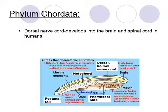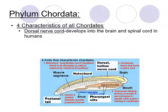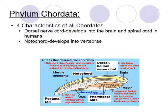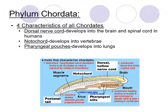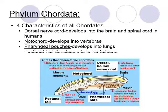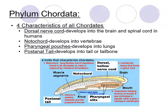Just to introduce Phylum Chordata — these are organisms that have either a backbone or at least a spinal cord. The four characteristics of chordates are: a dorsal nerve cord that develops into the brain and spinal cord; a notochord that develops into the vertebrae; pharyngeal pouches where either gills or lungs will form; and a post-anal tail used for movement or balance that develops into the tail or tailbone.